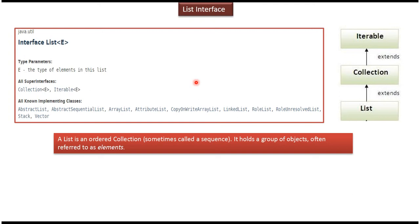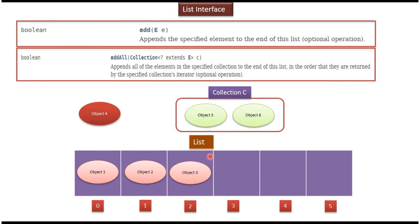Now I will cover what are the different kinds of methods which are available in the List interface. Here you can see the list has three objects: 0th index Object 1, 1st index Object 2, and 2nd index Object 3. Suppose I want to add Object 4 to this list — I have to pass Object 4 to the add() method, which will add it at the end of the list.